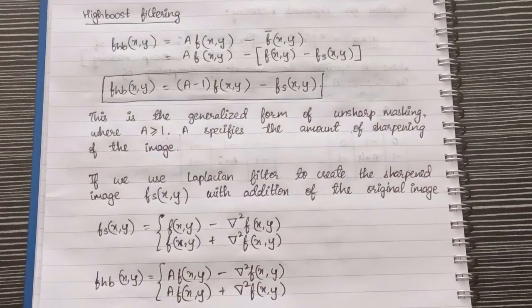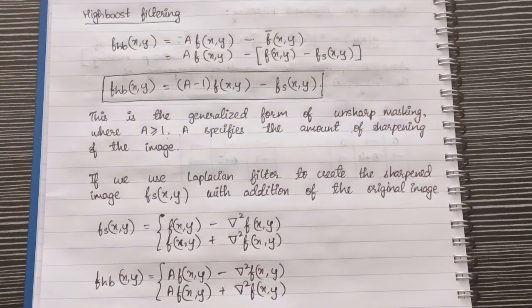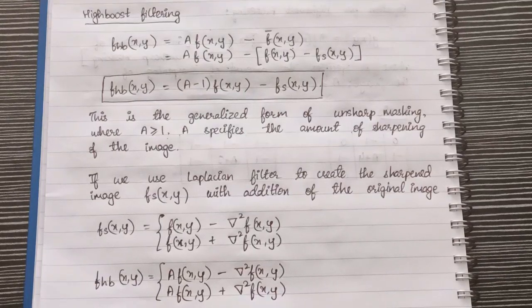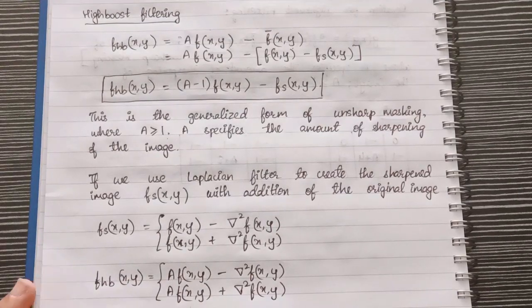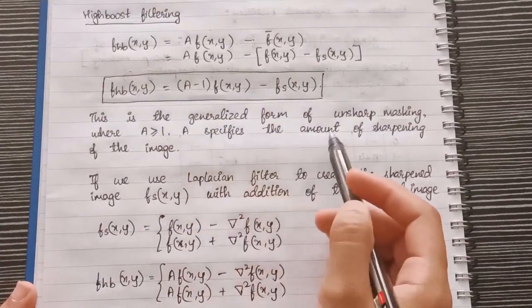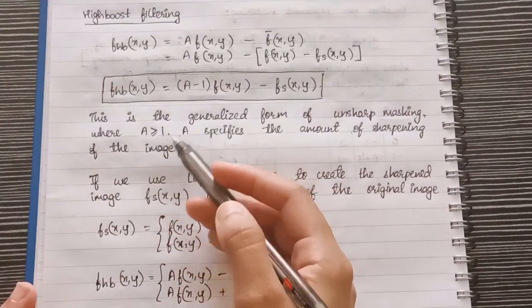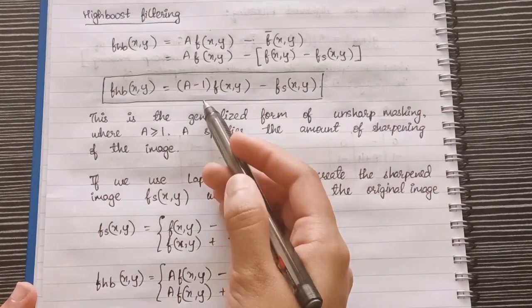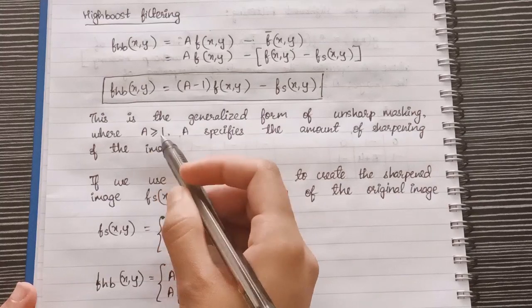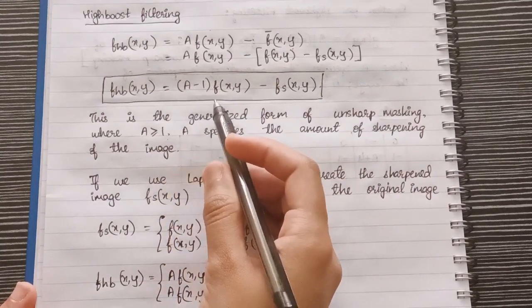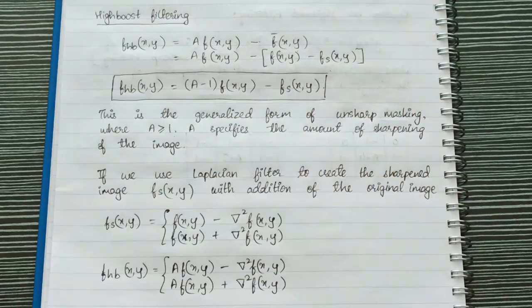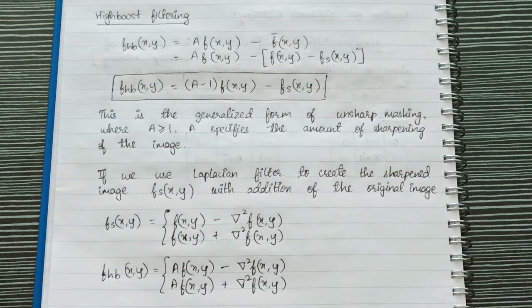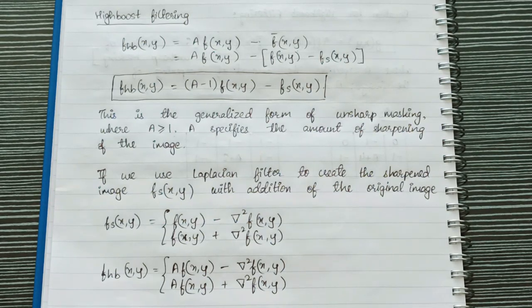Now you might be wondering why are we looking at all these equations. This is mainly because we are trying to get the mask for high boost filtering. Once we get the mask we can apply it on images and then we can get the sharpened images easily. So this equation which we got right here, this is the generalized form of unsharp masking where A is greater than or equal to 1. If A value is equal to 1 then it is unsharp masking. But if A is greater than 1 then it is high boost filtering. As A increases the sharpening of image also increases but only to a certain point, after which it decreases.